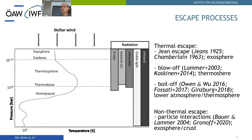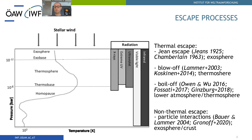Escape processes are divided into two big categories: thermal escape and non-thermal escape. There are three main thermal escape processes — Jeans escape, which works in the exosphere; blow off, which works mostly in the thermosphere; and boil off, which is driven in the lower atmosphere and in the thermosphere. There are also a large number of non-thermal escape processes that work both in the exosphere and on surfaces.